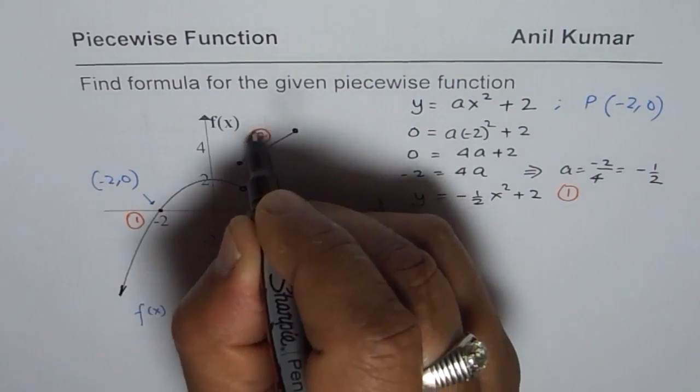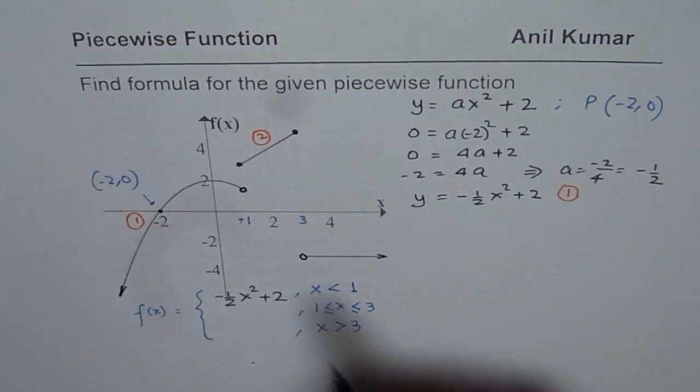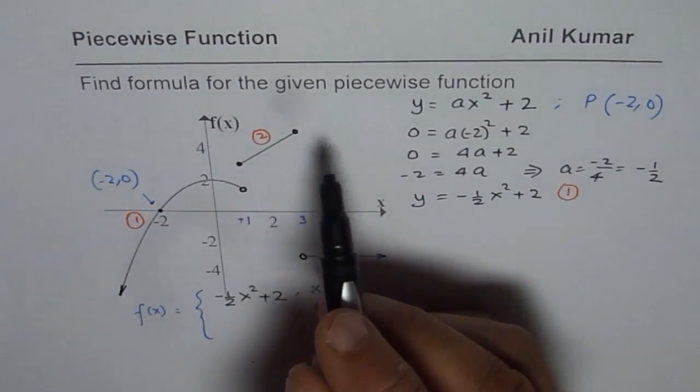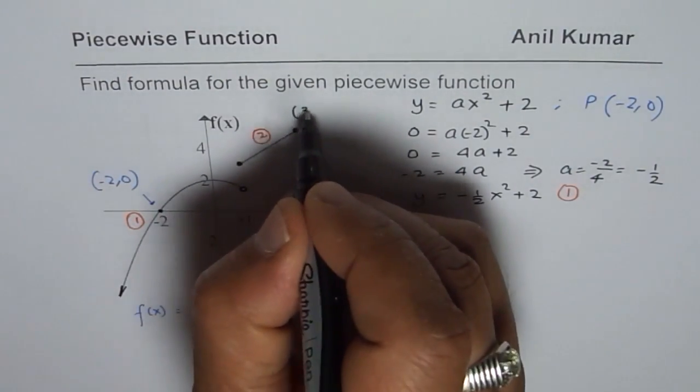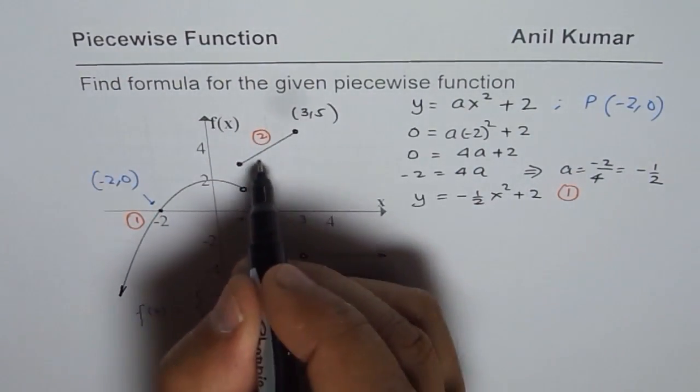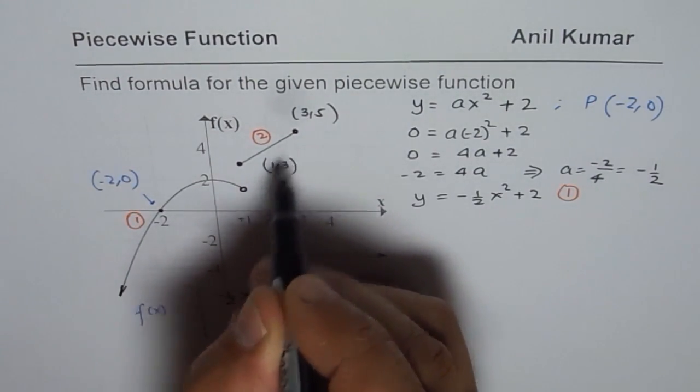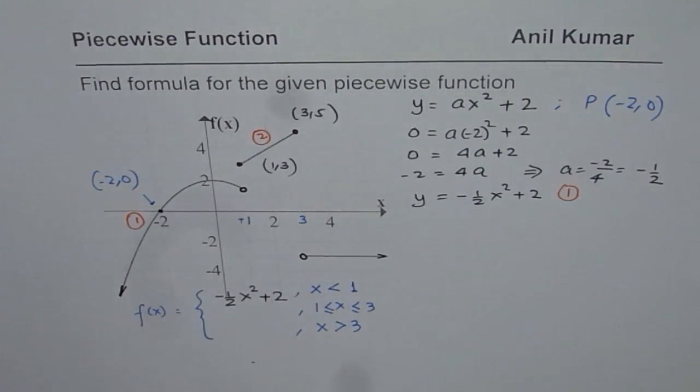Now let us find what is piece number 2. Line segment, we are given two different points. Let us identify these points. This is 3 and 5 and this point here is 1 and 3. So we are looking for equation of line segment between points 1 and 3 and 3 and 5.